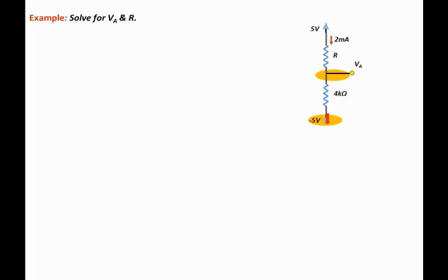The voltage at the top of the resistor will always equal the voltage drop across the resistor, I times R, plus the voltage at the bottom. This is a concept that we need to visualize and master.